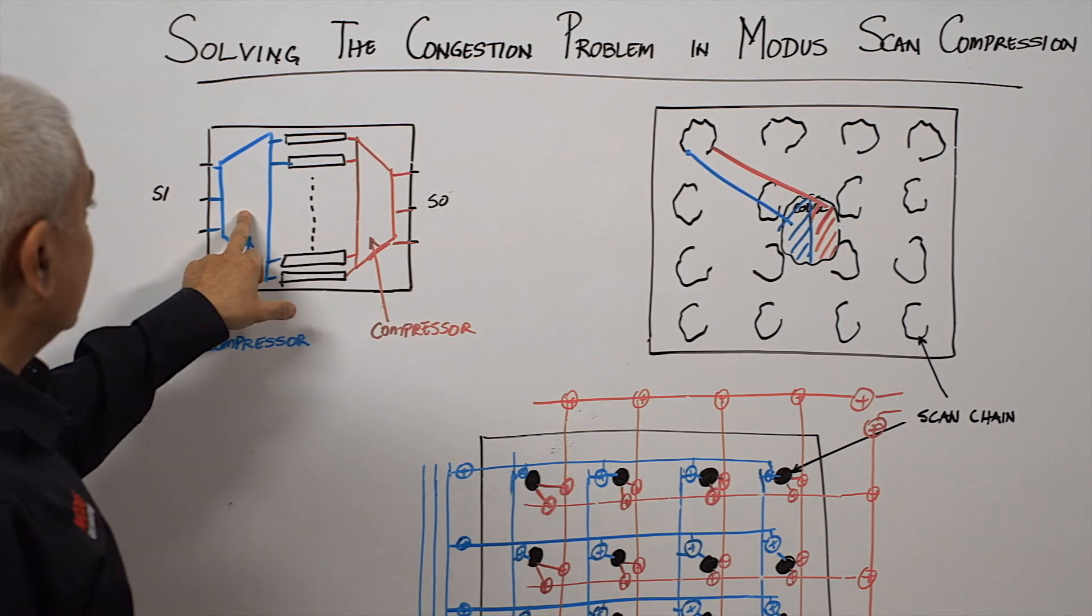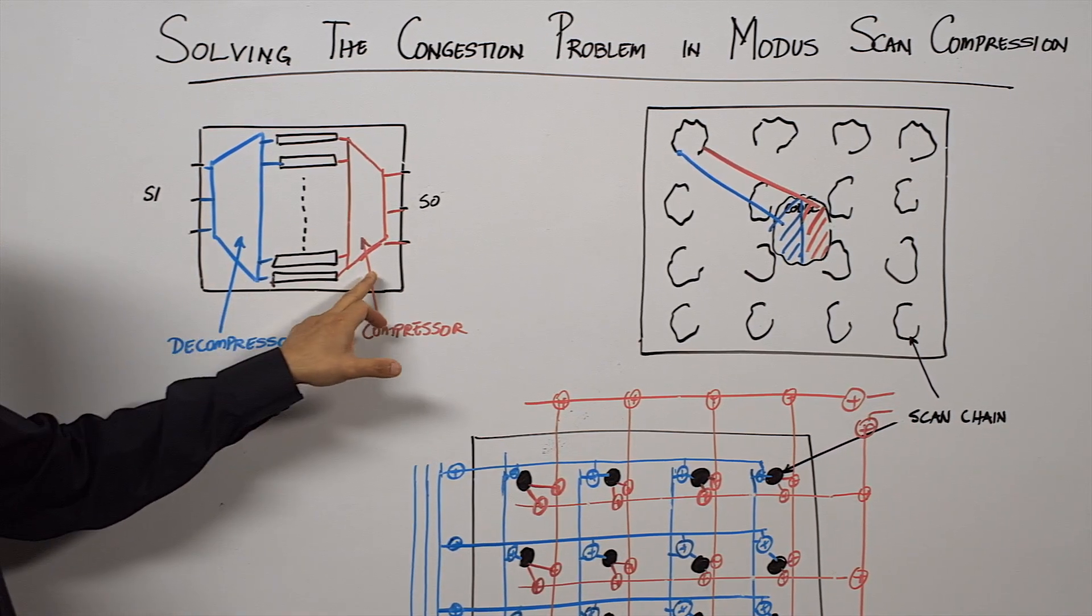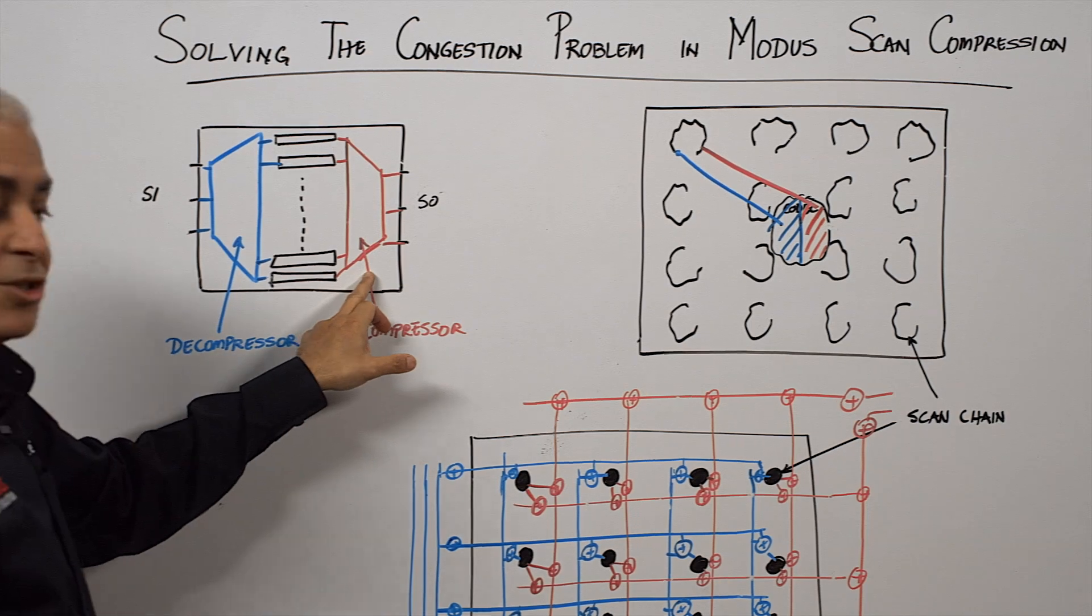The input side is called the decompressor, which is marked in blue. The output side is the compressor, which is marked in red.